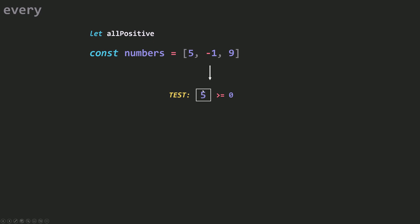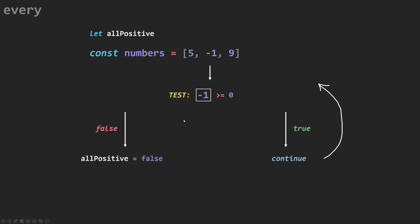Let's start with five. Five is greater than zero, so five passes the test. Whenever the test is passed — the condition evaluates to true — I want to continue and go to the next one. Then if I go to minus one, minus one is not greater than zero, so minus one didn't pass the test — the condition evaluated to false. In this case, because not all numbers pass the test, I want to set allPositive to false and then break out from the loop. This is exactly how every works.